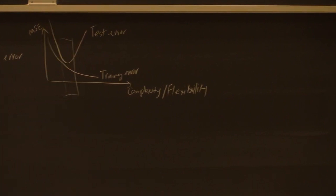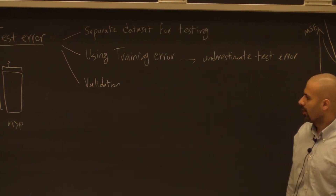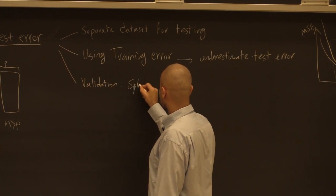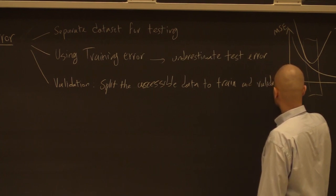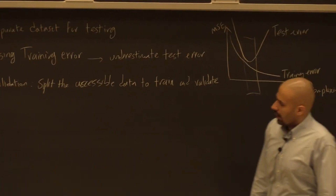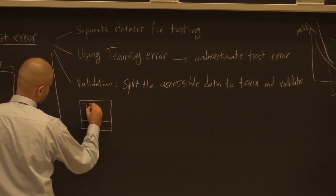The third idea is using a validation set. The idea is to split the accessible data into train and validate. Each data point is either used for training or for validation, with a clear distinction. So we shuffle the data and split it — maybe the first 80% for training and 20% for validation. We need to ensure the training portion doesn't become too short relative to the number of features.